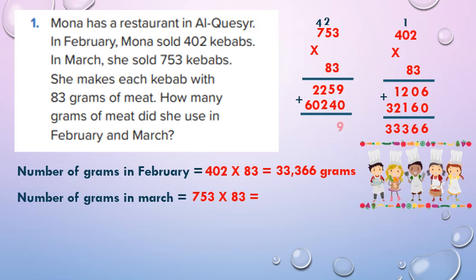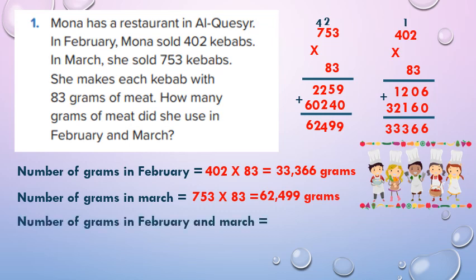Then add the 2 products: 9 plus 0 equals 9, 5 plus 4 equals 9, 2 plus 2 equals 4, 2 plus 0 equals 2, then last 6. So, number of grams of meat in March: 62,499.